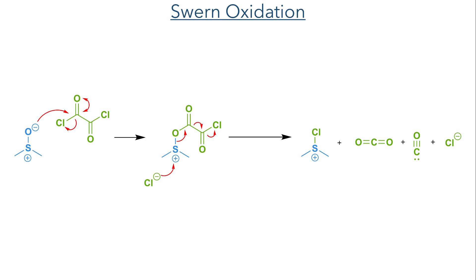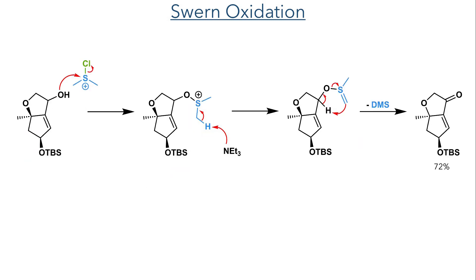Dimethyl sulfoxide first reacts with oxalyl chloride, eliminating chloride that can then act as a nucleophile towards the sulfonium centre. This forms a sulfonium chloride upon the elimination of carbon dioxide, carbon monoxide, and chloride. The sulfonium chloride is then attacked by the hydroxyl group, which eliminates chloride. Triethylamine then deprotonates the molecule, and the resulting intermediate undergoes an intramolecular deprotonation, forming the carbon-oxygen double bond upon the elimination of dimethyl sulfide.